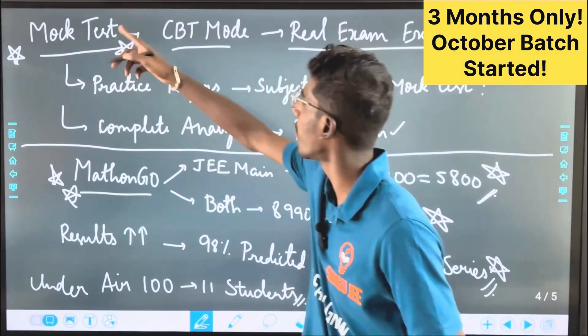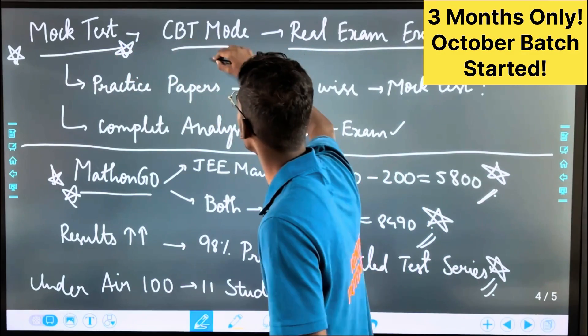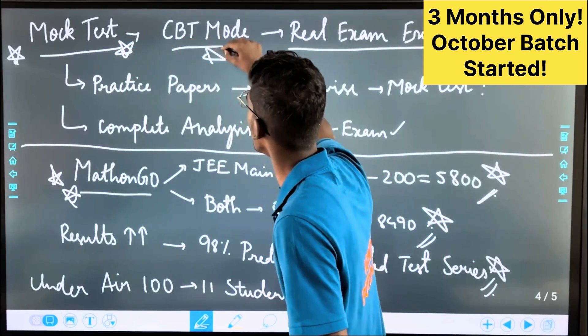So you can get the number of people in the same level. That's the main thing. Let's go to the Mockt CBT mode. Now you can get the Mockt CBT mode.